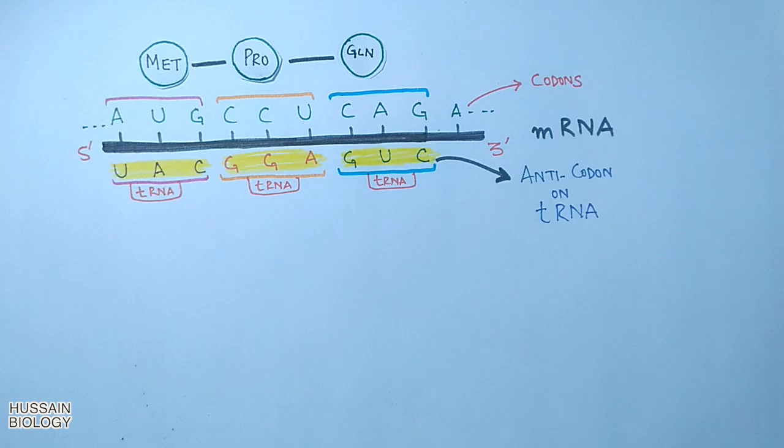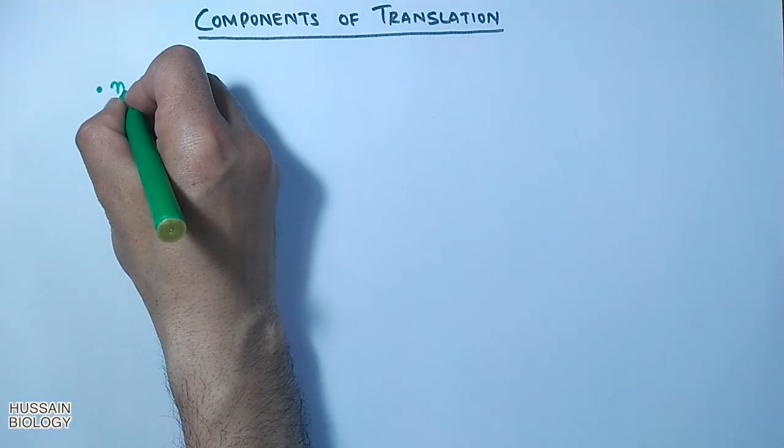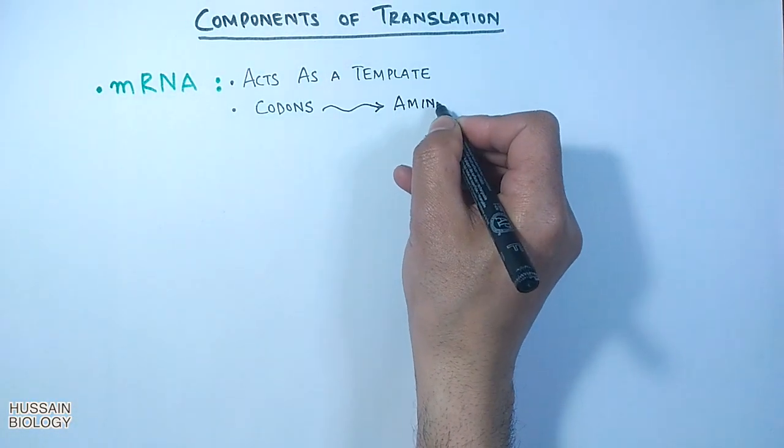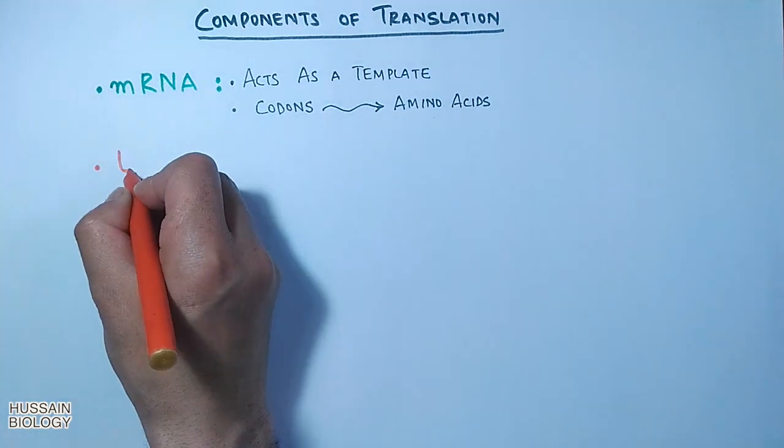The complete mechanism will be discussed in another part. Now let's see the components of translation. First is the mRNA molecule which acts as a template, as it provides codons for amino acids to be incorporated into the polypeptide chain.